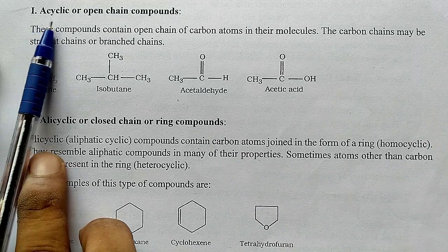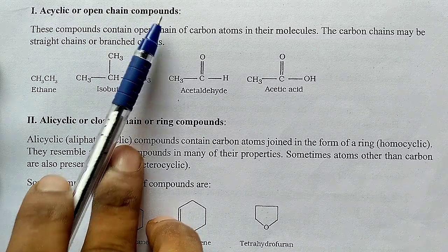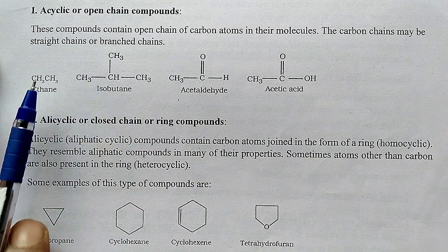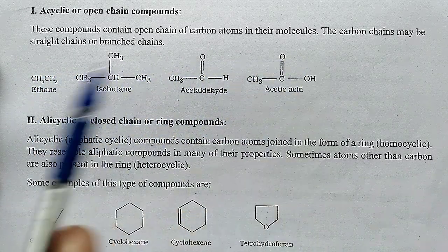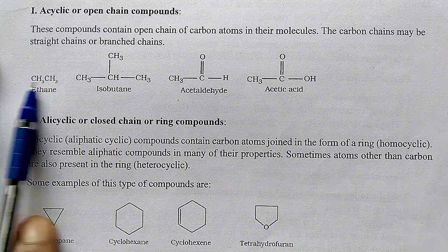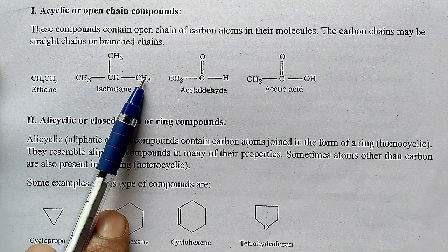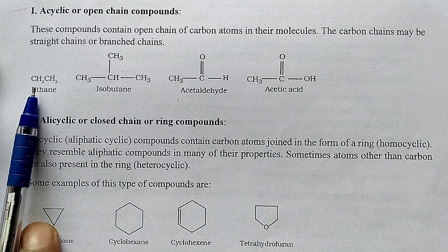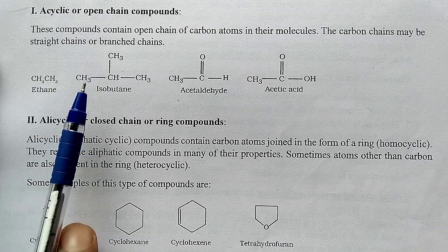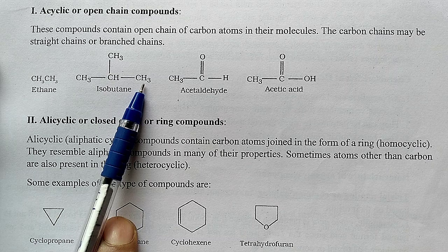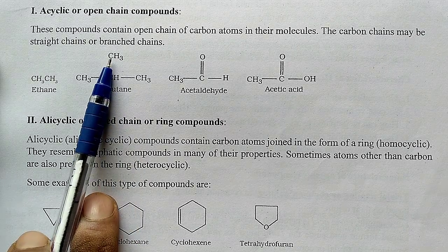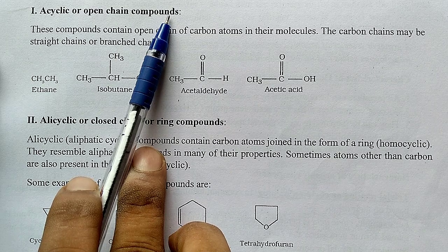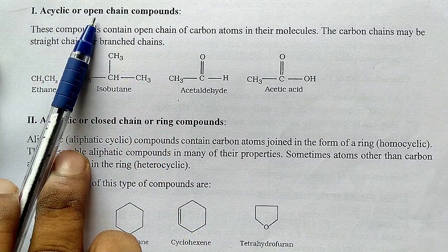Now we will discuss what are acyclic or open chain compounds. These compounds contain carbon atoms in their molecule, and it may be a straight chain or a branched chain — they do not contain ring-type structures. For example, ethane is a straight chain compound, and isobutane has three carbons in a straight chain with one branching. These are called acyclic or open chain compounds.